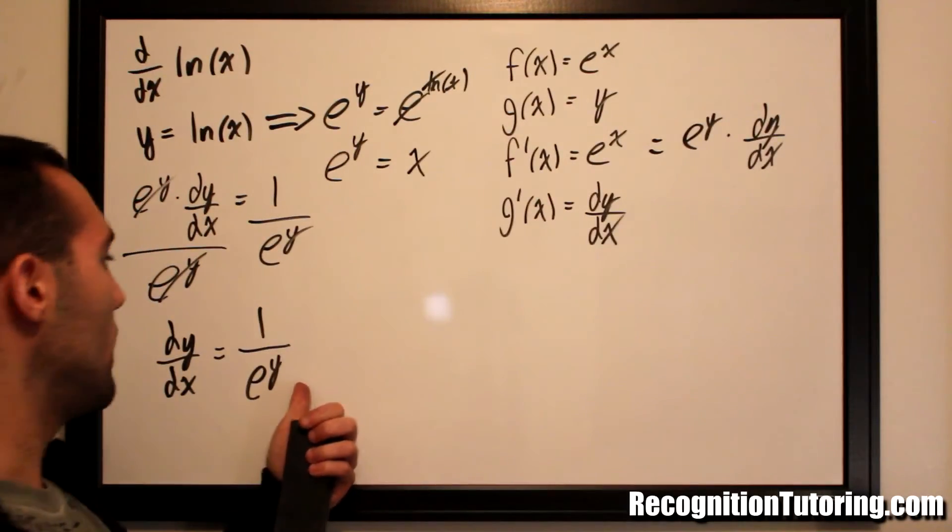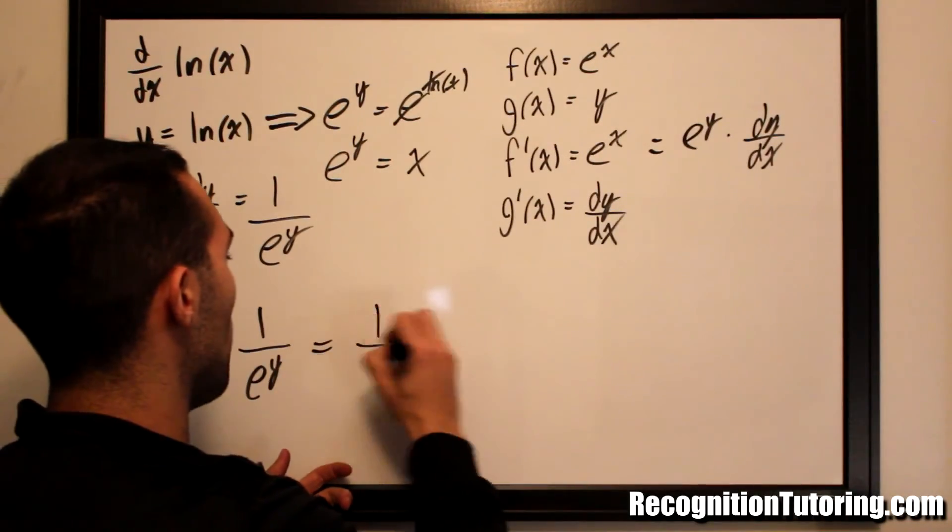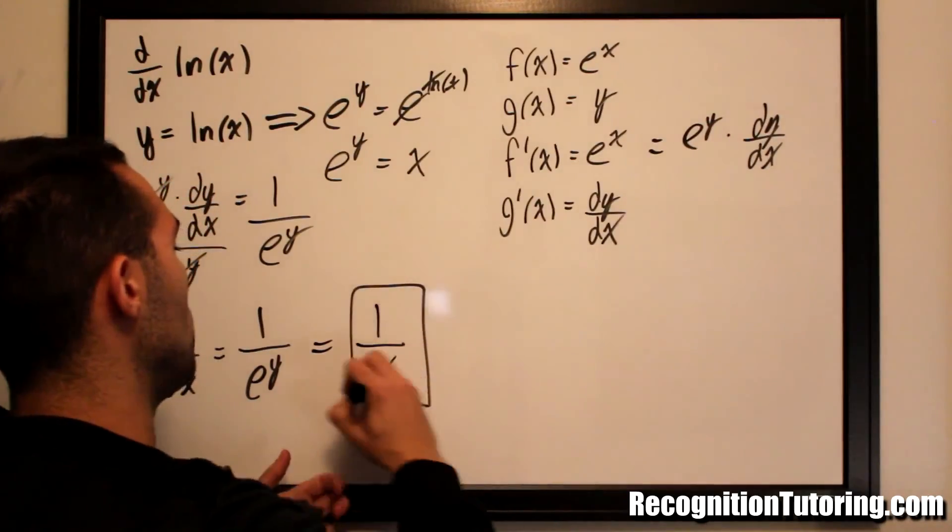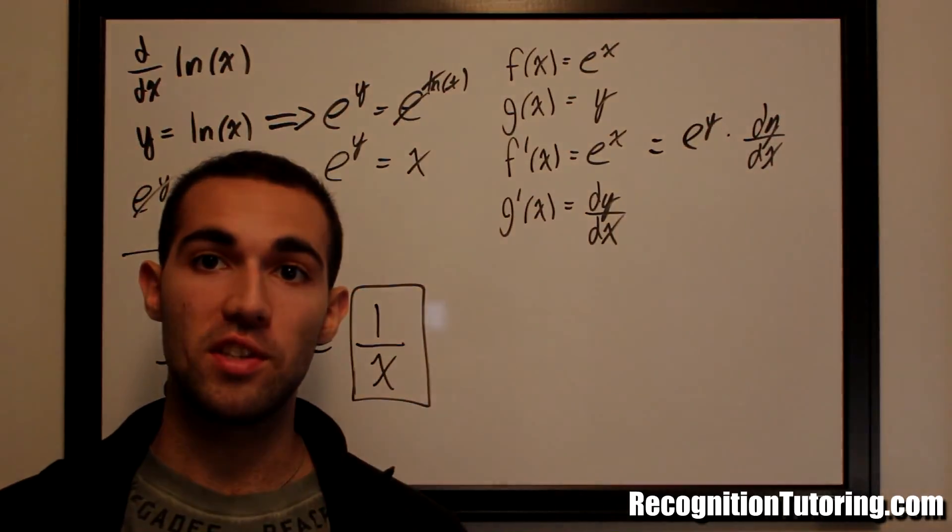1 over x is equal to dy by dx of ln of x using implicit differentiation.